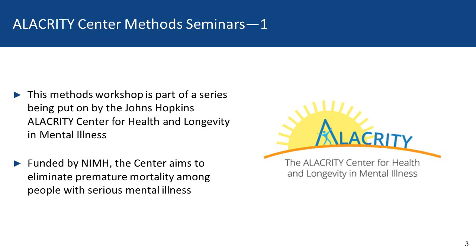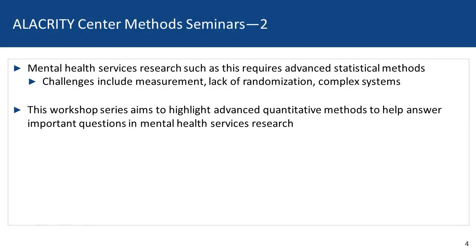This methods workshop is part of a series put on by the center to provide introductions to innovative and useful methods to consider when studying issues related to premature mortality. Mental health services often require advanced statistical methods to help address issues that present themselves in this work. These issues can include challenges like properly measuring outcomes and exposures, the inability to randomize treatments, interventions, and policy solutions, and accounting for the complex health and social systems within which mental health services are delivered and within which people with serious mental illness interact. Our hope with this workshop series is that we can highlight some advanced quantitative methods to help you answer important questions around mental health services research.